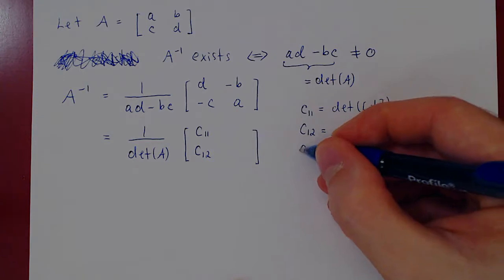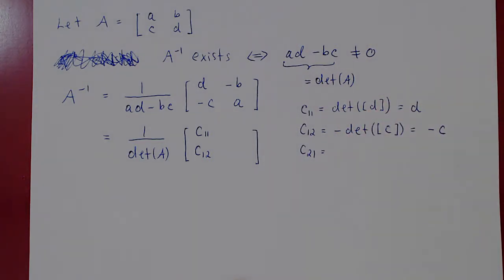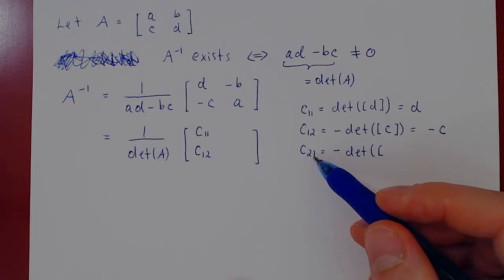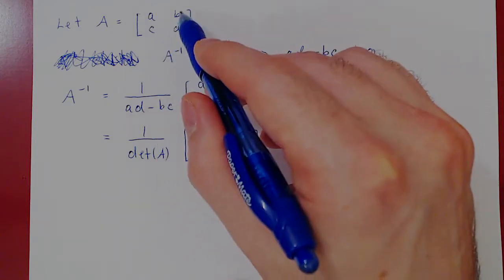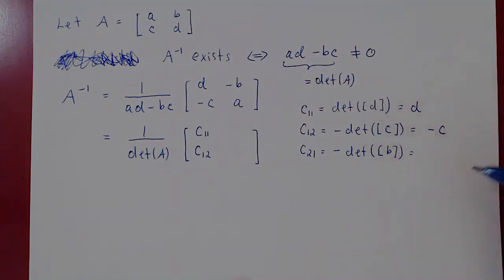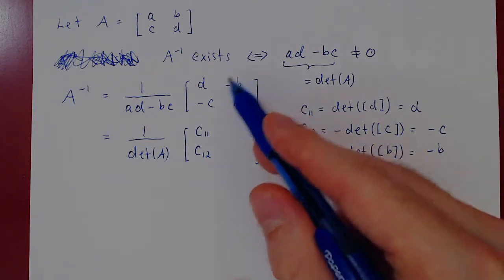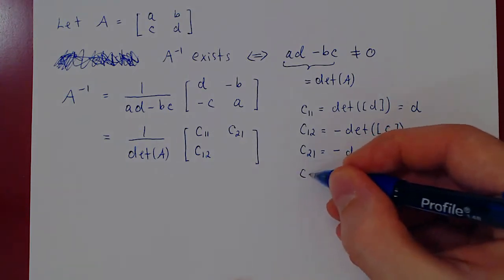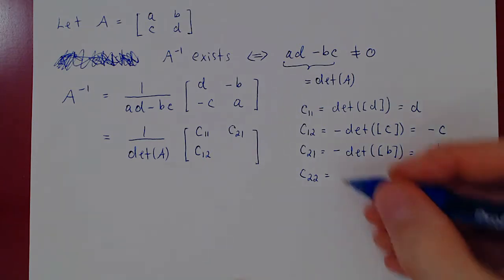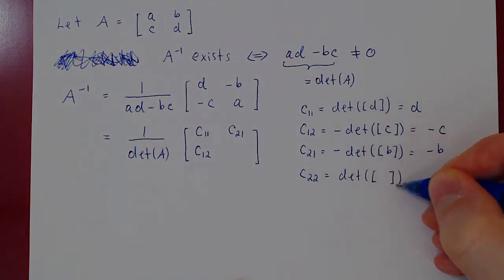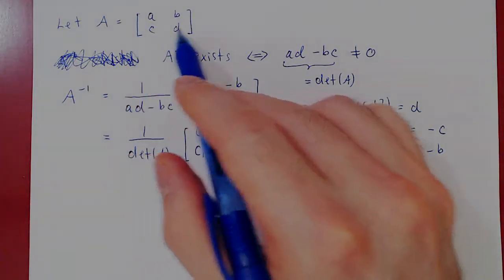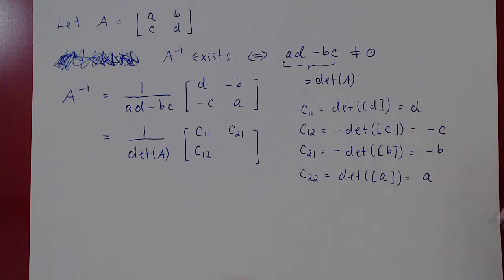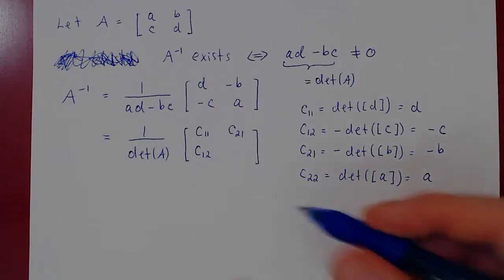Let's find C21. 2 plus 1 is 3, so negative 1 cubed is negative 1. The determinant of the matrix obtained from A after we delete the second row, first column gives us the entry B. So all we get is negative B — and negative B is C21. And let's find our fourth and final cofactor, C22. 2 plus 2 is 4, negative 1 to the fourth power is positive 1. Delete the second row, second column, and what you have is the entry A. The determinant of the 1 by 1 matrix A is simply A. So we can replace A by its cofactor C22.